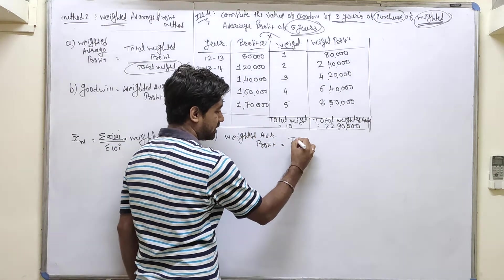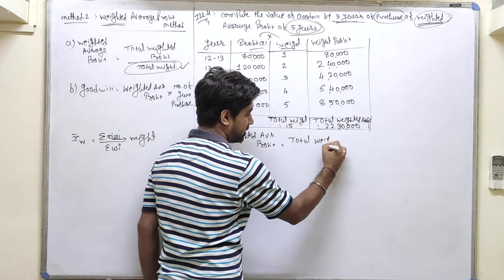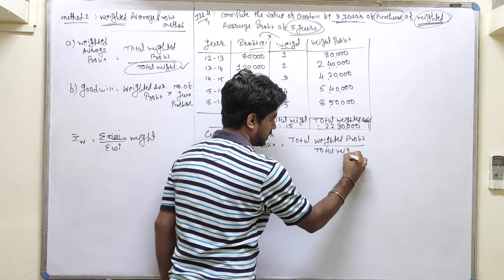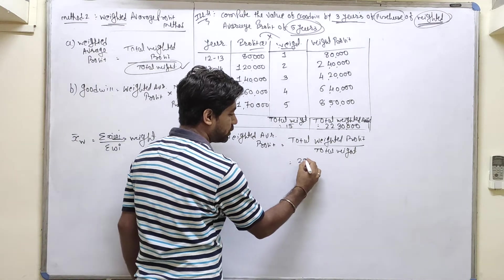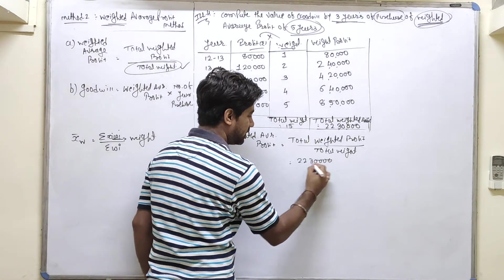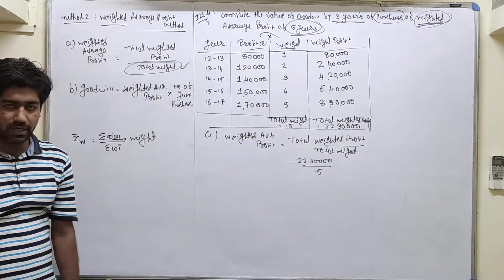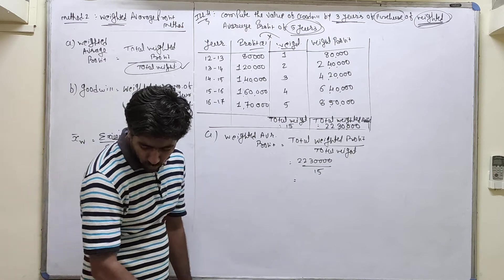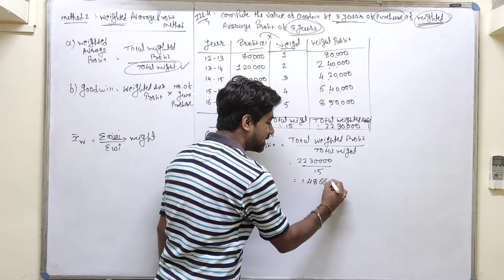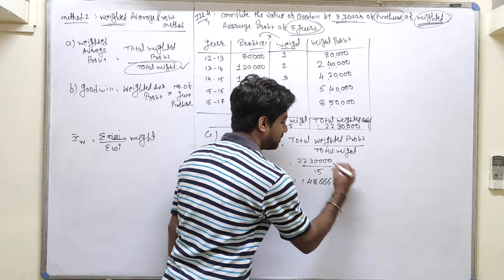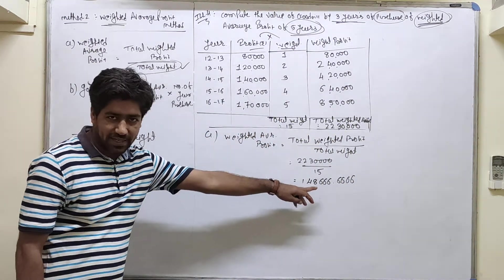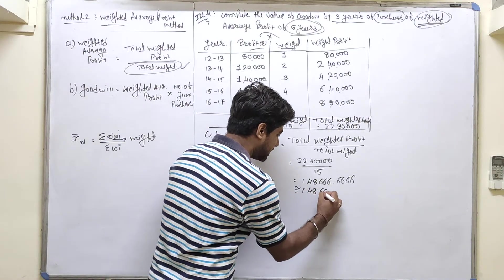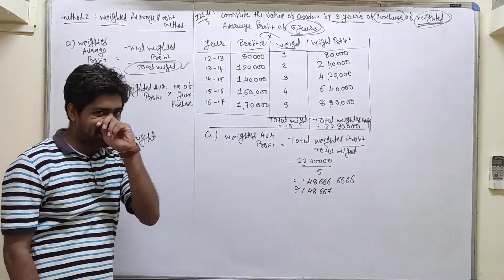We find the weighted average profit using the formula: total weighted profit divided by total weight. Our total weighted profit is 22,30,000 and total weight is 15. Dividing gives 1,48,666.66. In decimal that is 1,48,666.66, or rounding to a perfect figure, 1,48,667. Both are valid in your examination.